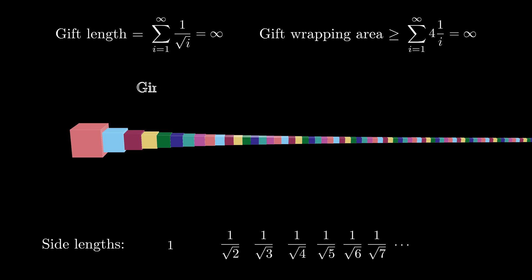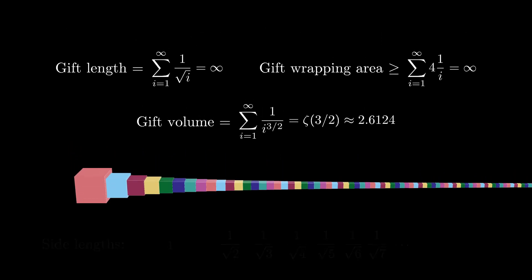Finally, if we wanted to figure out how much we could actually put in this gift, we can compute the volume of the gift as the sum where i ranges from 1 to infinity of 1 over the square root of i cubed, which is 1 over i to the 3 halves. It turns out that this can be computed by using the Riemann zeta function at 3 halves and it's approximately 2.6124.